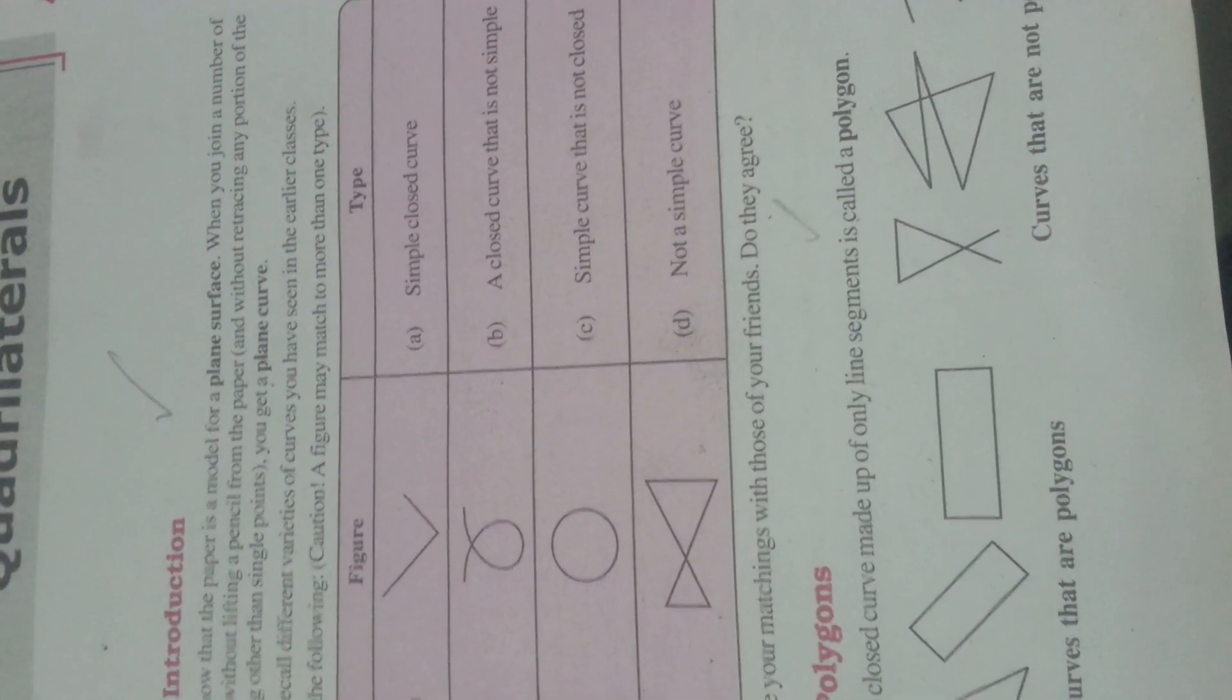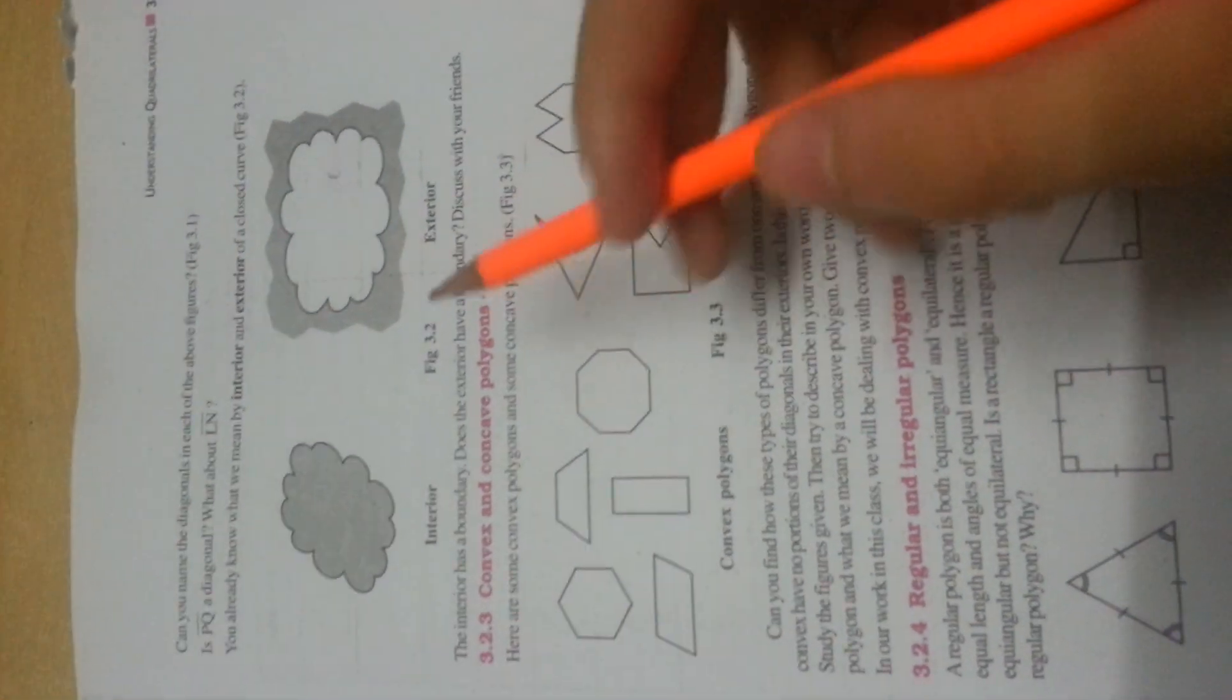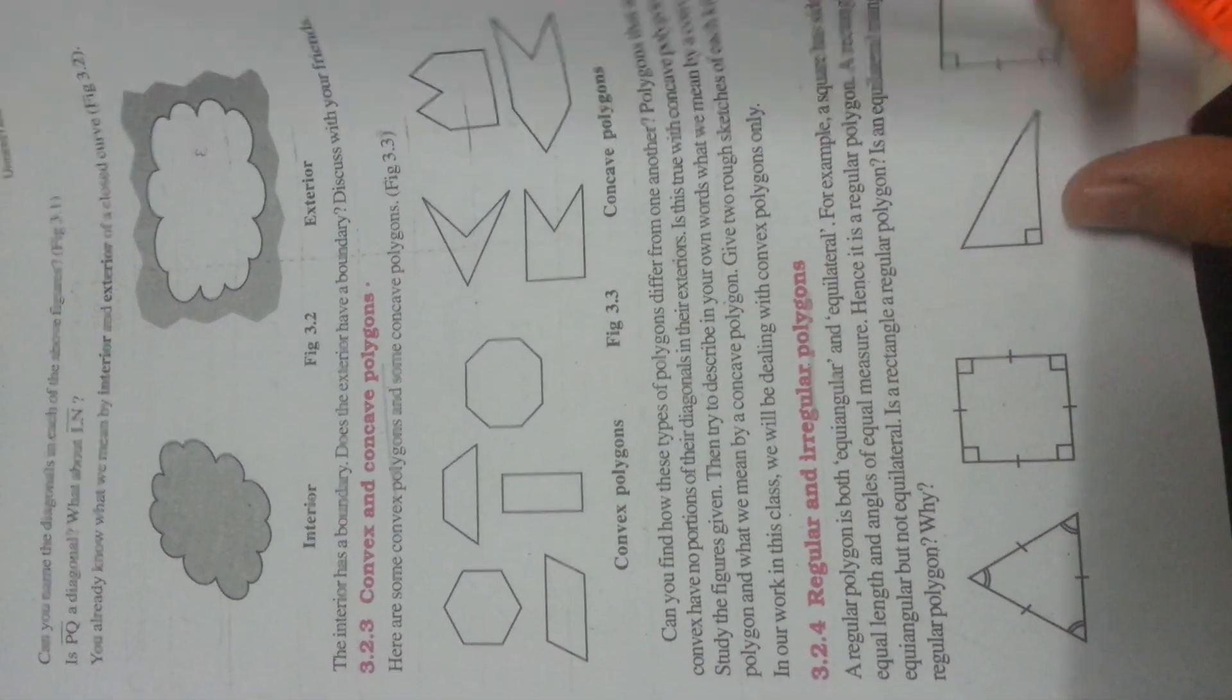You need to make sure you know about convex and concave polygons, regular and irregular polygons, because these kinds of questions come for one or two marks. Sometimes they come just as a one-mark part of a larger question, so you don't have to lose your marks. Just make sure you know about them.